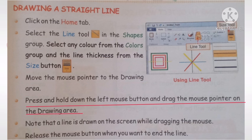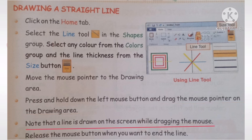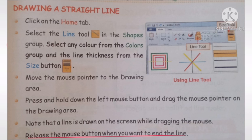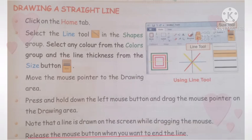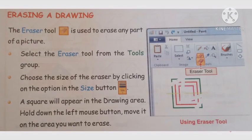Press and hold down the left mouse button and drag the mouse pointer on the drawing area. Release the mouse button when you want to end the line. Release, and you will have drawn a straight line.